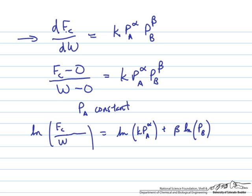The material balance for a tubular reactor would just be that the rate of change of the flow rate of the product with respect to the catalyst mass is equal to the reaction rate, and we've already said we want the reaction rate to follow this form.